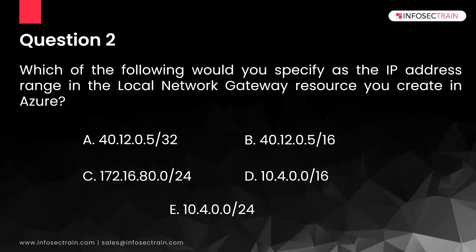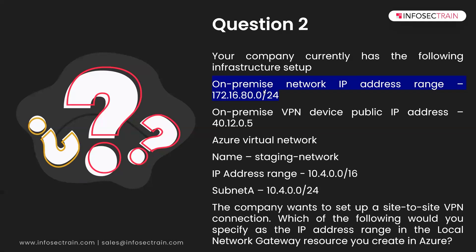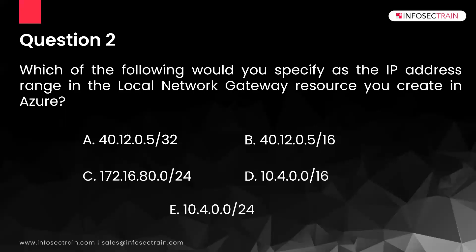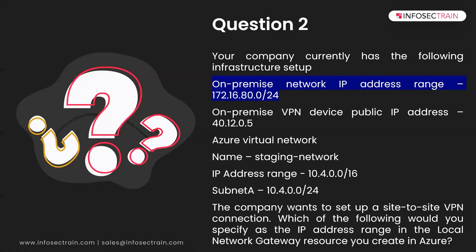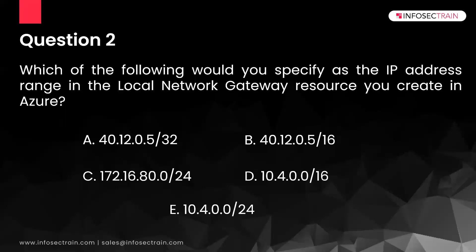Looking back at the question, the on-premise network IP address range is 172.16.80.0/24. So the answer for question two is option C — 172.16.80.0/24. If you have deployed the VPN practically, you should know the answers to both the first two questions.